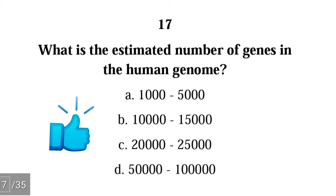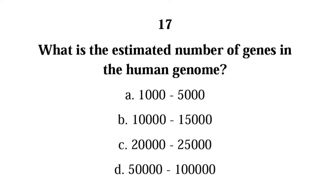Number seventeen: what is the estimated number of genes in a human genome — A) 1,000 to 5,000, B) 10,000 to 15,000, C) 20,000 to 25,000, D) 50,000 to 100,000? The correct answer is C — the human genome has about 20,000 to 25,000 genes.